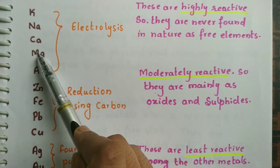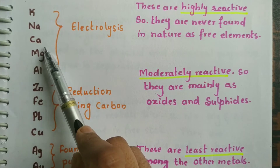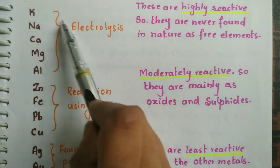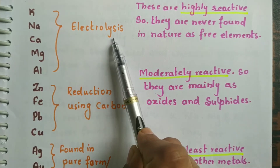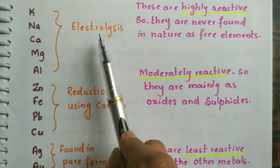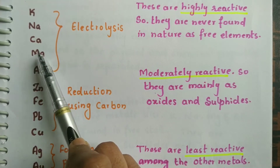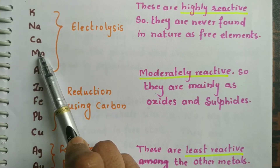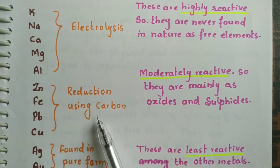For the separation or isolation of these highly reactive metals from their ores, we use a special process called electrolysis. You have come across this process in previous chapters. They make a very strong bond between all the elements, so we have to break the bond by passing electricity.